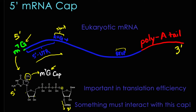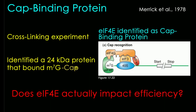Previous studies had found that this cap was important in translation efficiency. If you removed this cap from an mRNA molecule, that mRNA molecule would not be able to be translated with nearly the efficiency it would if it did have the cap. For this to be the case, we know that something must be interacting with this cap. Sure enough, in 1978, Merrick et al. identified the cap binding protein.